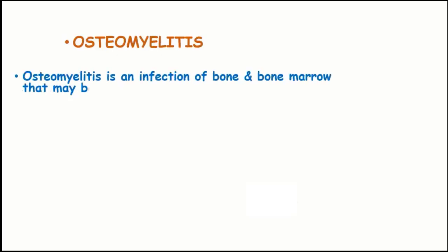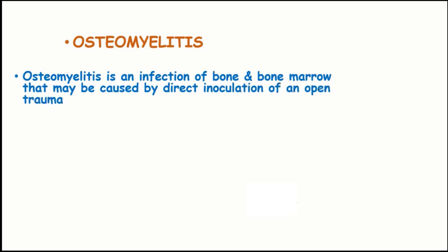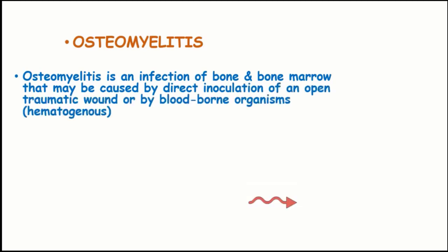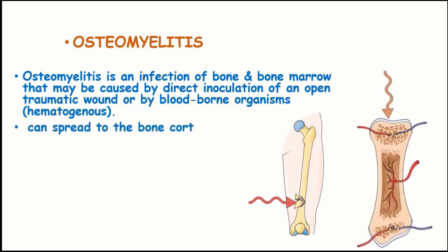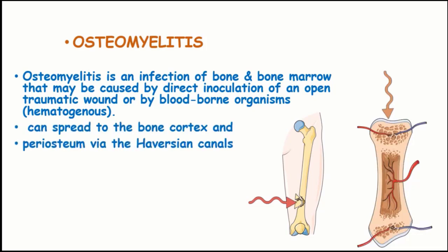Osteomyelitis is adverse to inflammation and infection of the bone and the bone marrow that can be caused by direct inoculation of the open traumatic wound or by blood-borne organisms through the hematogenous route. This can spread through the bone cortex and the periosteum via the Haversian canals.